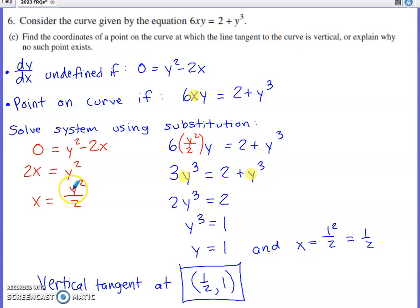Substituting 1 right here, 1 squared over 2 gives me the corresponding X. That's the only combination of X and Y that I get that makes both of these equations true. Therefore, my only vertical tangent is at one-half for X comma 1 for Y.